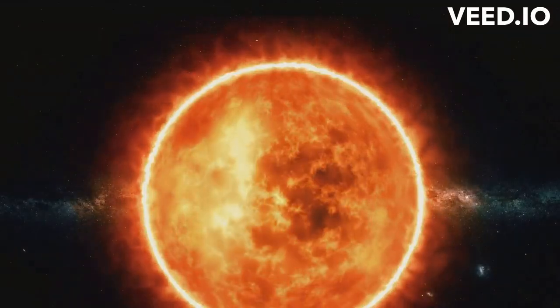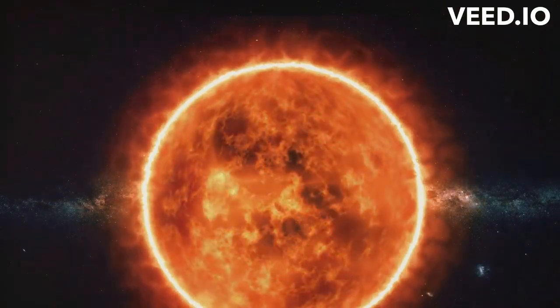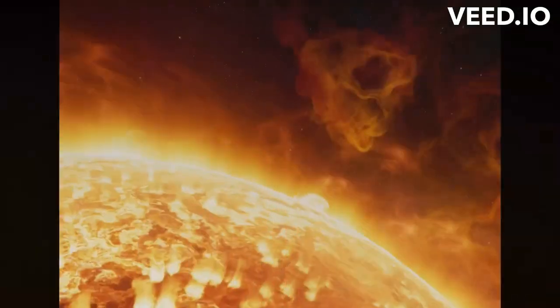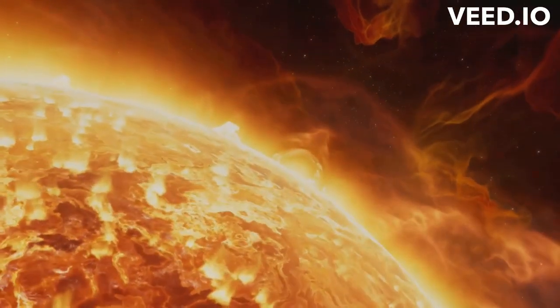So, our Sun began its journey as a humble cloud of dust and gas, gradually condensing under the immense pull of gravity to form a glowing protostar. But how did our humble protostar transform into the blazing Sun we see in our sky today?